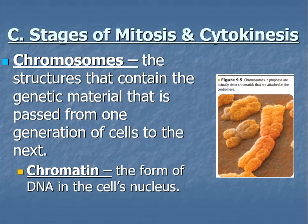We talked briefly about the definition of chromosomes, which you already wrote down, so you don't necessarily need to write it again. Chromosomes are the structures that contain the genetic material that is passed on from one generation of cells to the next. Chromatin is actually the form of DNA in the cell's nucleus, which is usually just a tight little ball of string. When they are ready to go through mitosis, they take on the form you see here in this image from your textbook — it kind of looks like a fuzzy X shape.